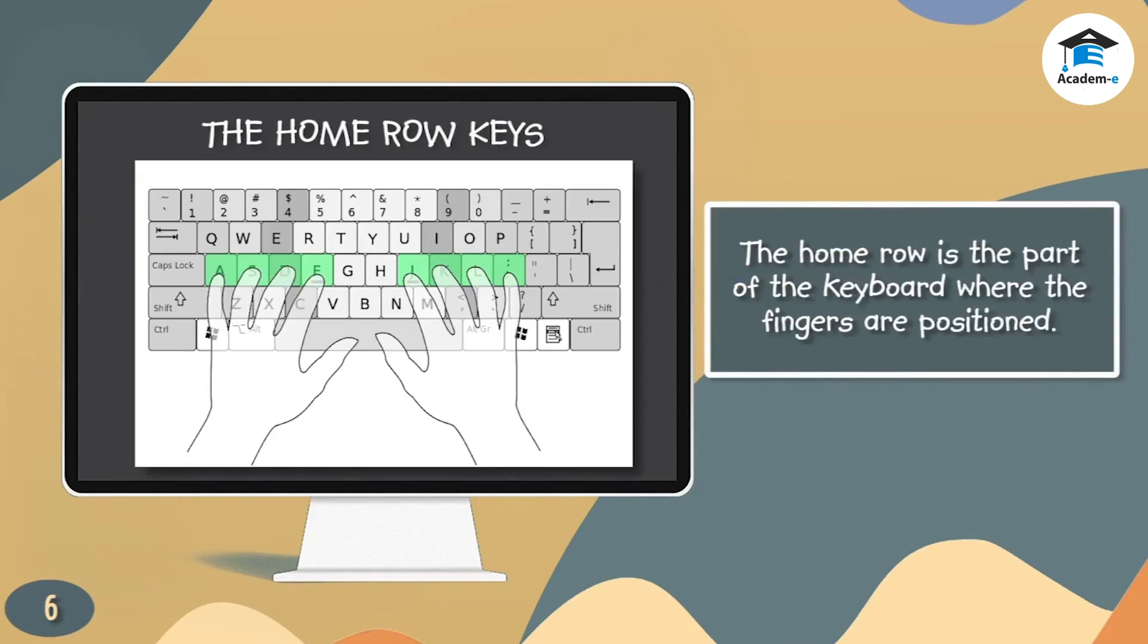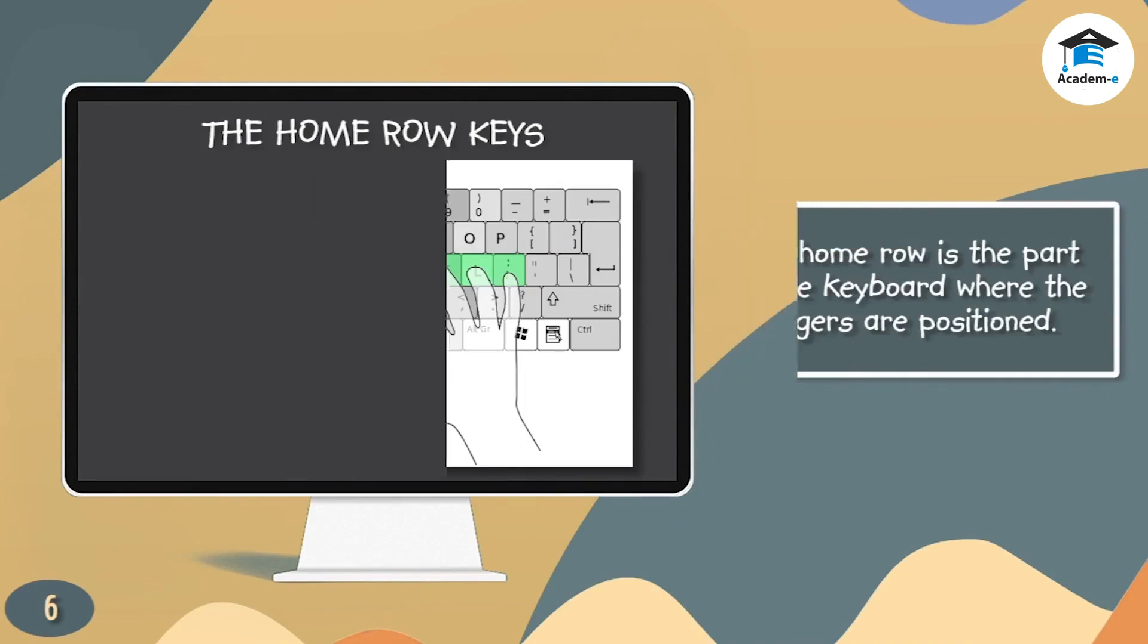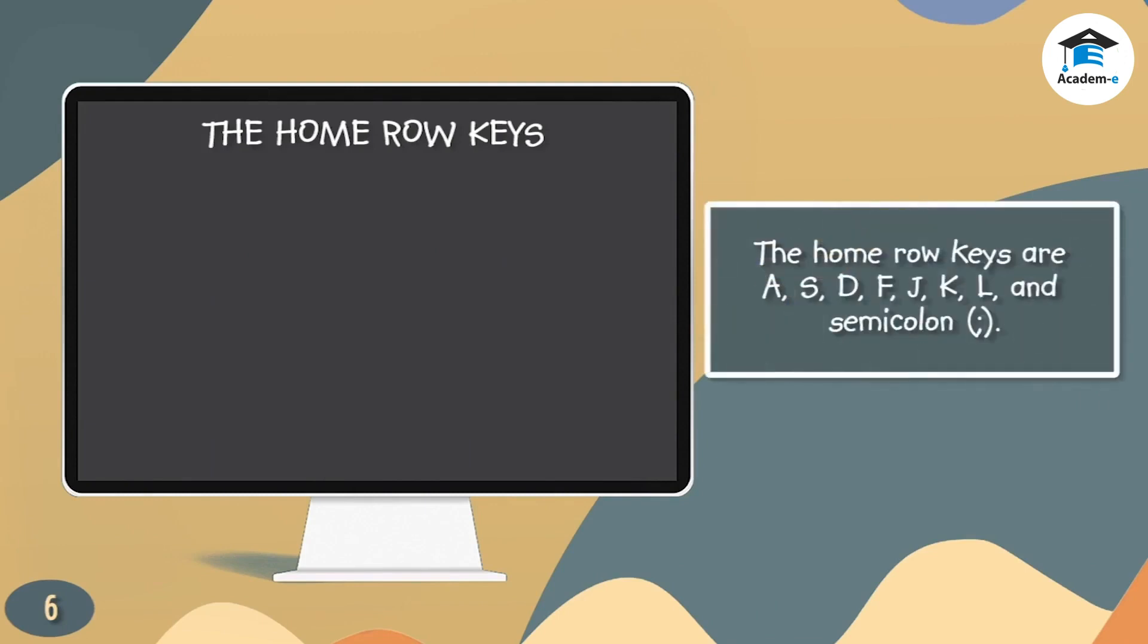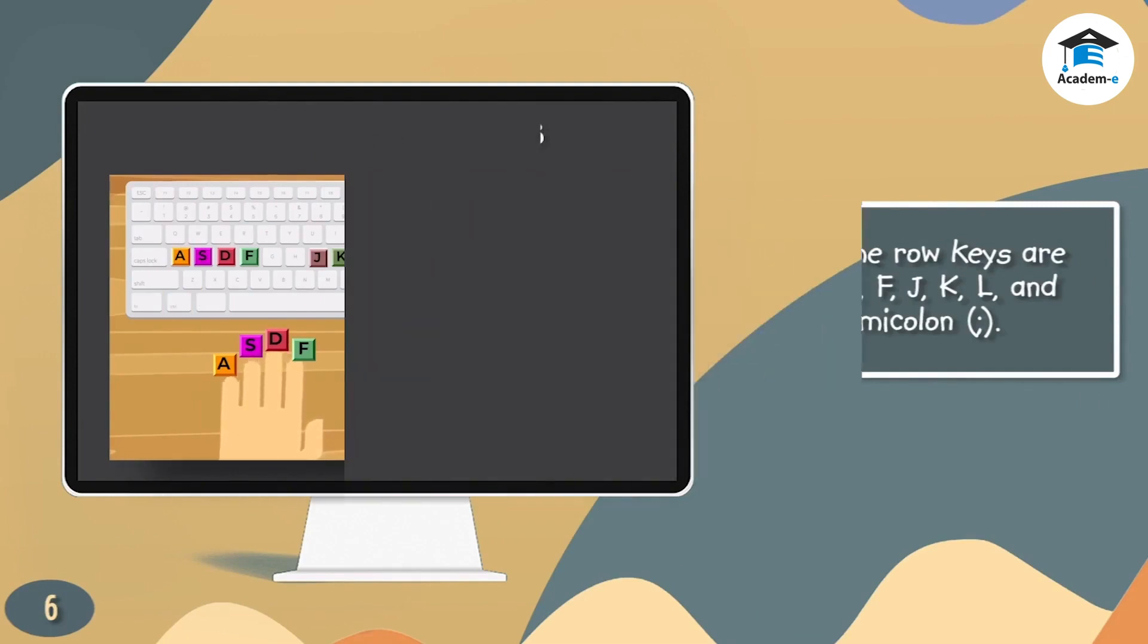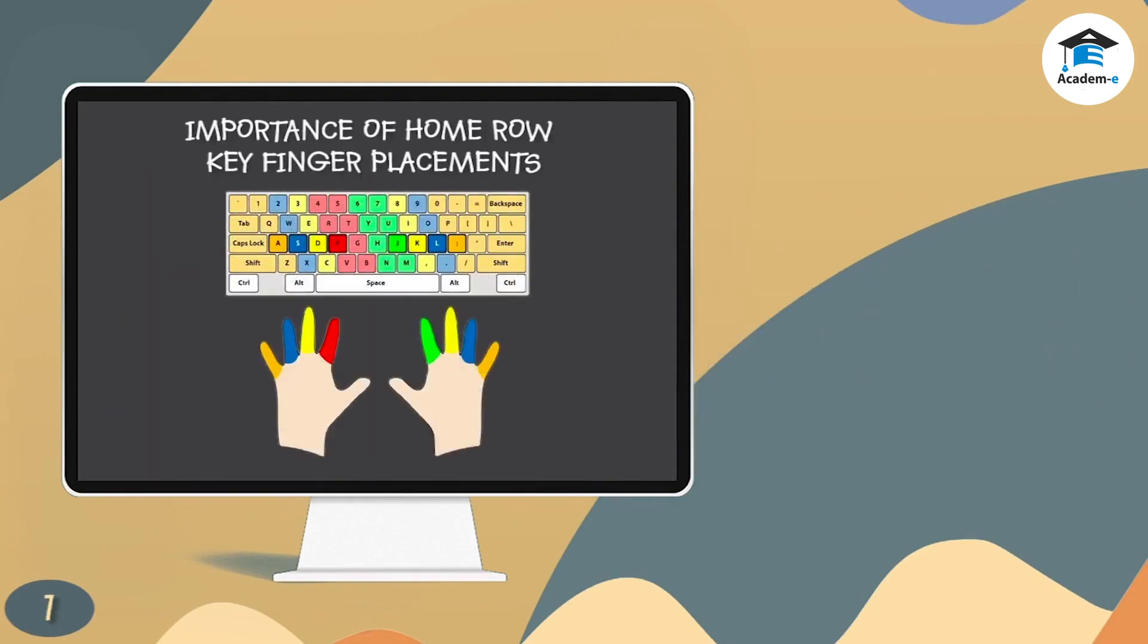The home row keys: The home row is the part of the keyboard where the fingers are positioned. The home row keys are A, S, D, F, J, K, L, and semicolon. Importance of home row key finger placement: Why should the fingers be placed on home row keys?